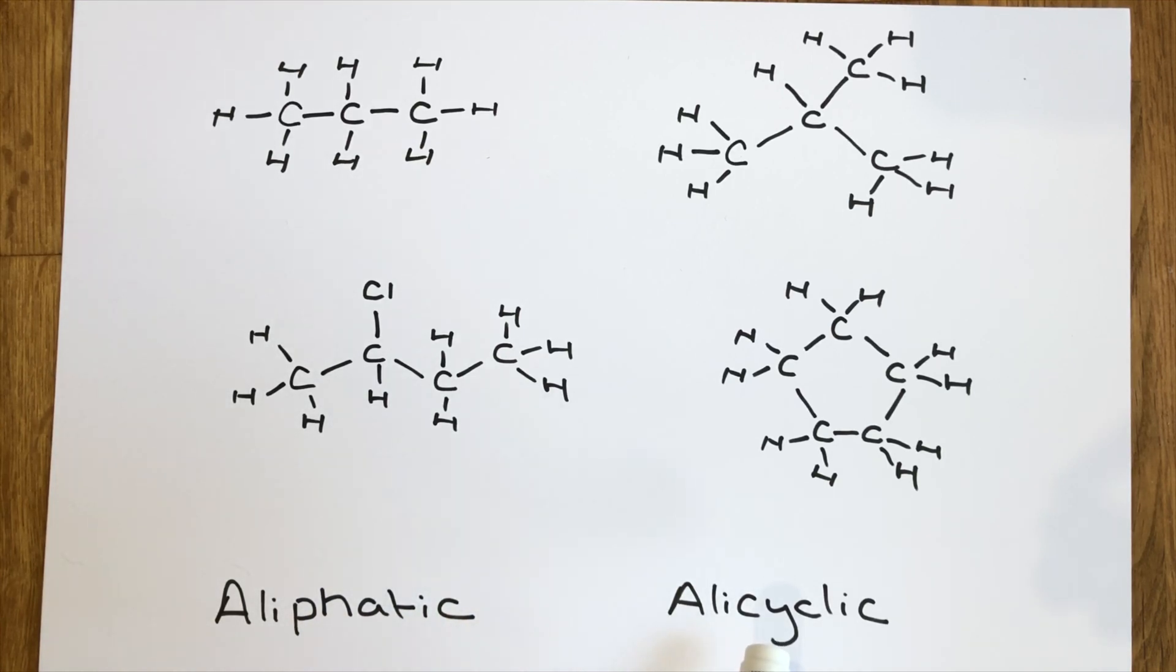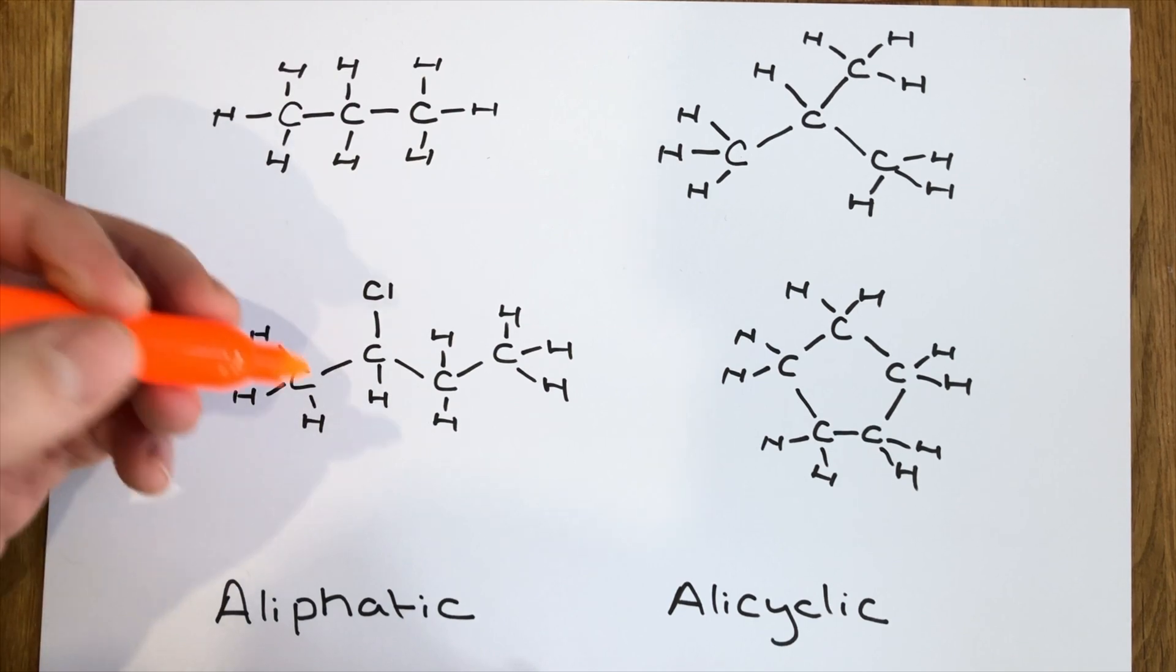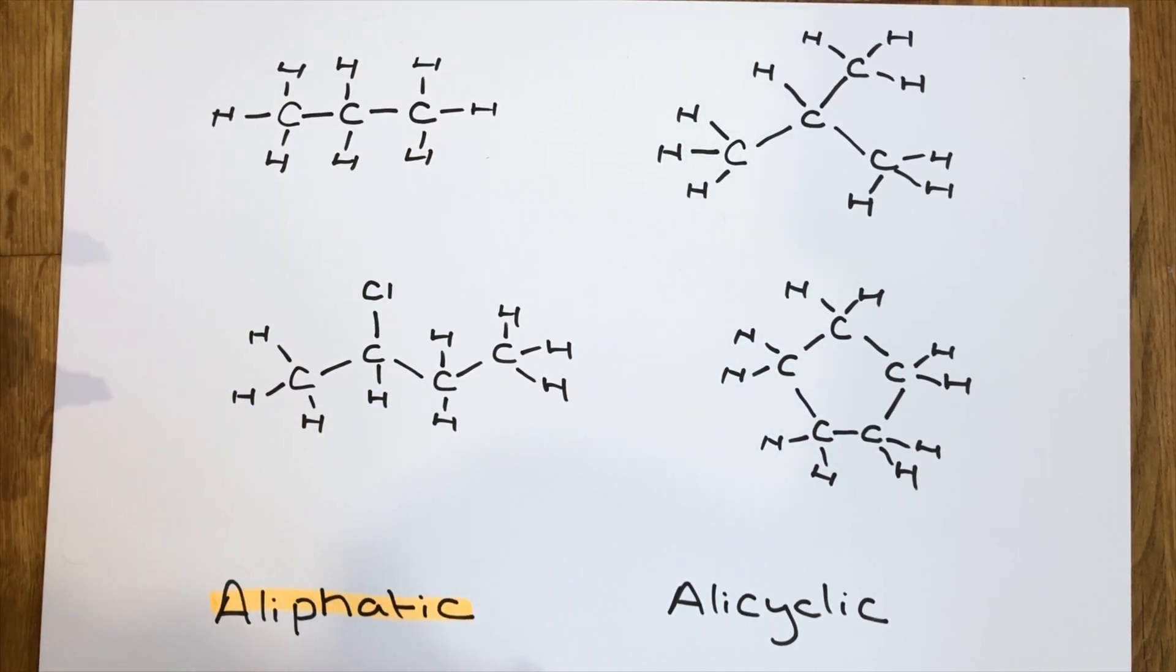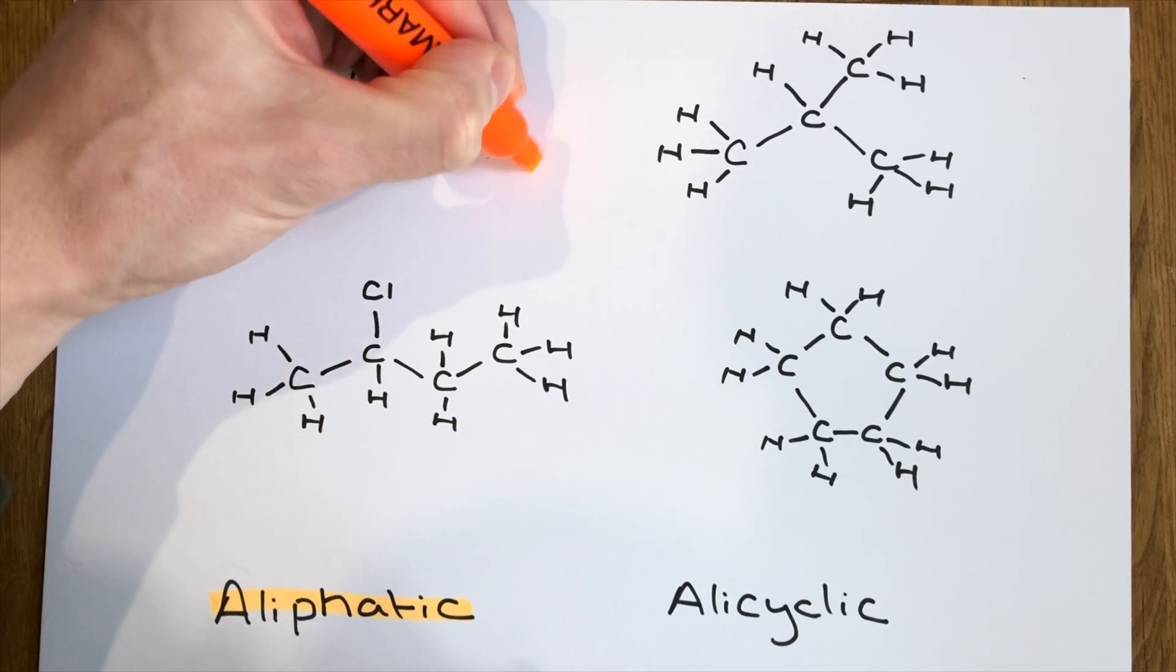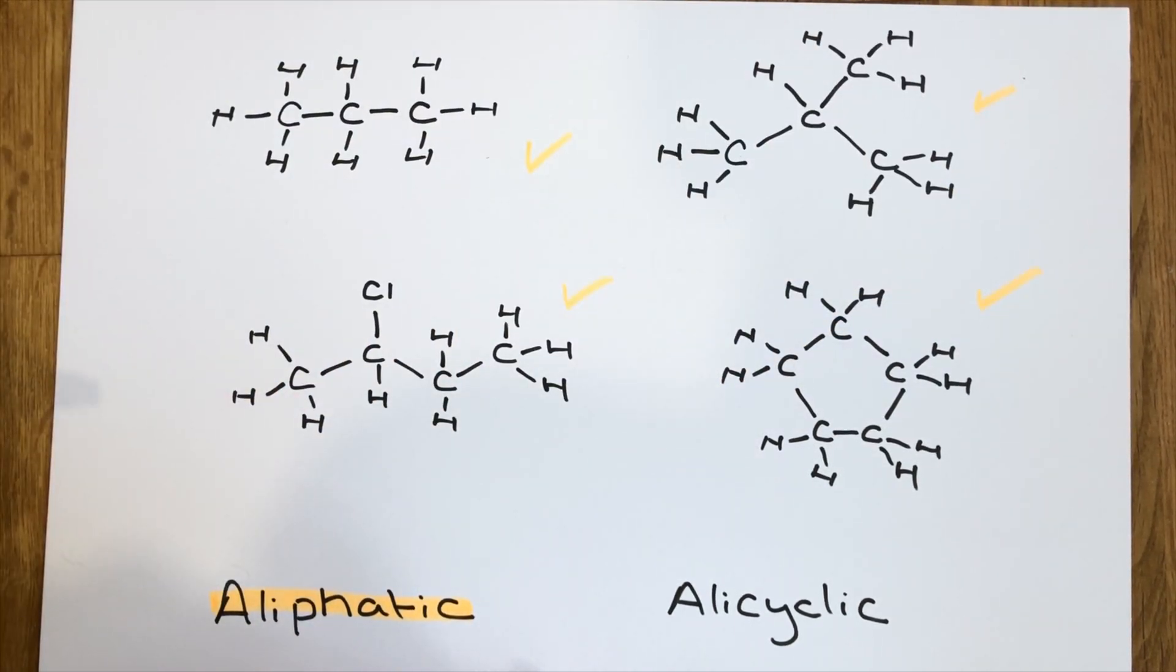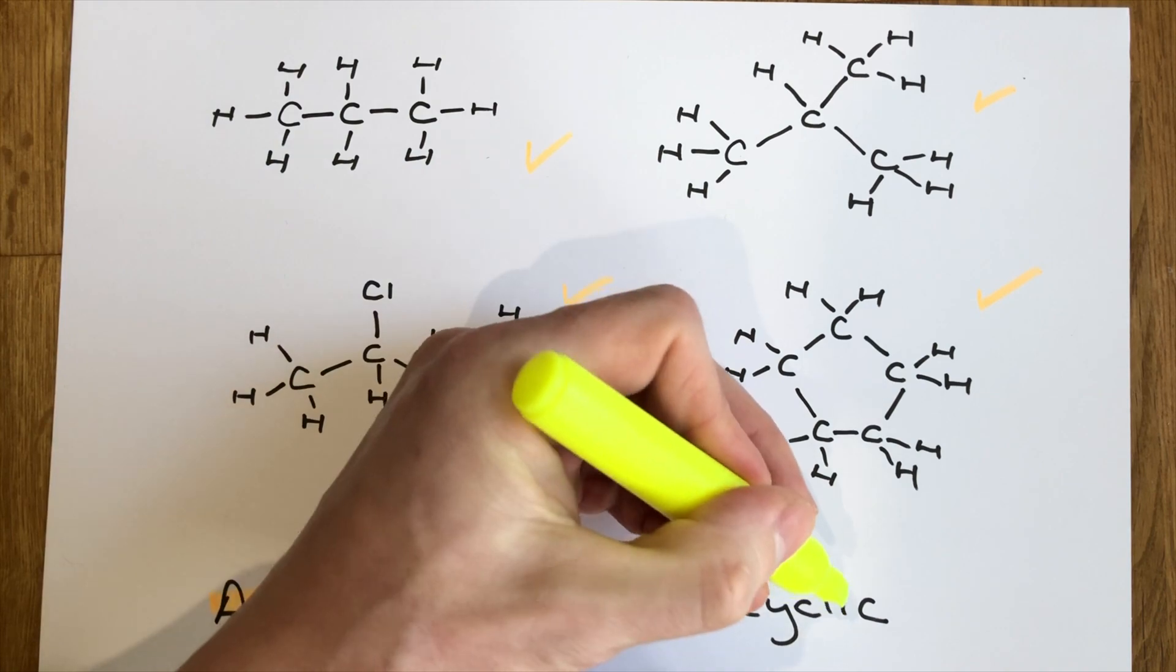So here to get started with, you'll notice I've got two terms at the bottom of the page, aliphatic and alicyclic. Now when we're looking at all of our different organic molecules in these examples, the aliphatic ones are the ones that I'm going to put a little orange tick to now. In fact, it's every single one of them. They are all examples of aliphatic molecules.